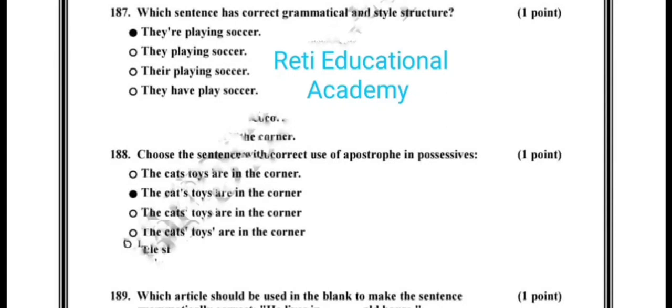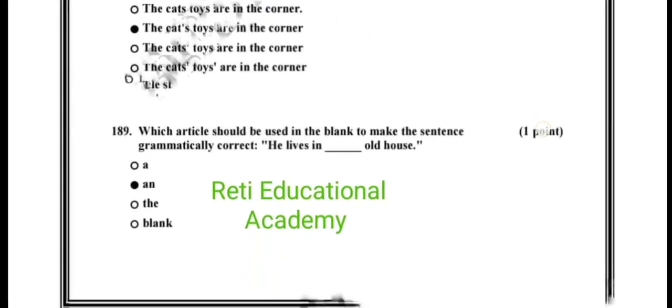Question number 188. Choose a sentence with the correct use of apostrophe in possessives. And the correct option is the cats' toys are in corner.